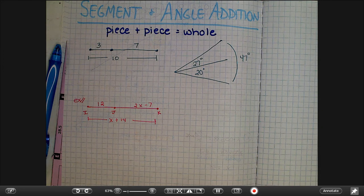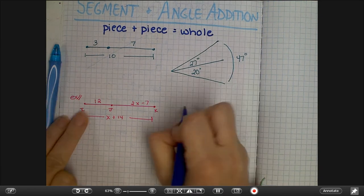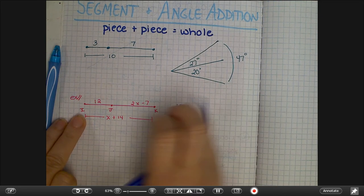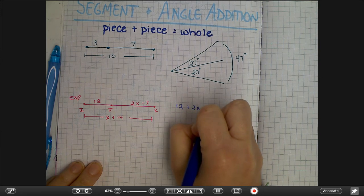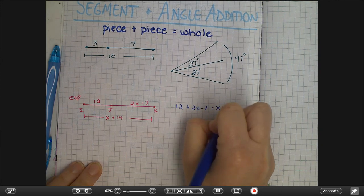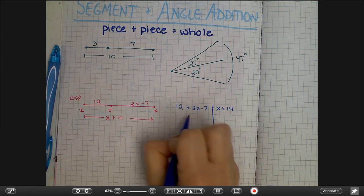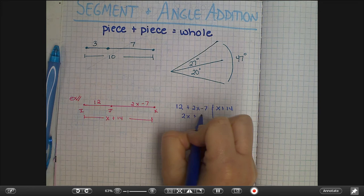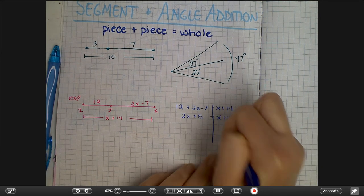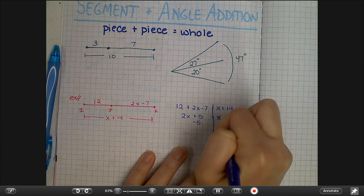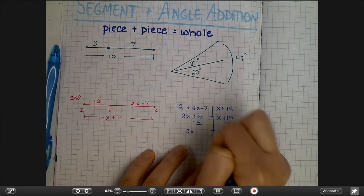In that case you need to set up an equation. The equation would go with this form: piece plus piece equals whole. So our first piece is 12 plus our second piece 2x minus 7 is equal to the whole thing. And then you just solve the equation, so combine like terms and then solve by moving things around using the properties of equality.